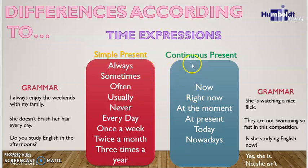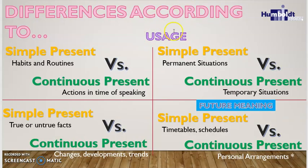Now let's analyze some differences according to the usage. The simple present is for habits and routines, but the continuous present is for speaking about actions at the time of speaking. Also, the simple present is for permanent situations, but the continuous present is for temporary situations.